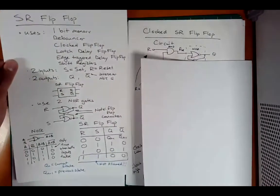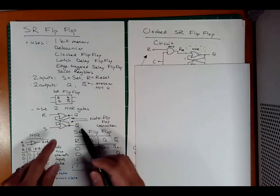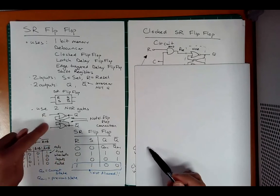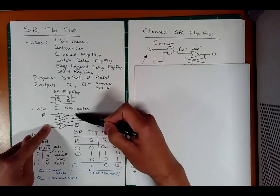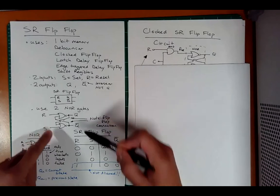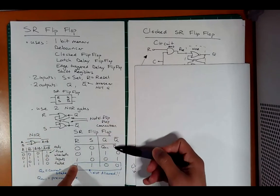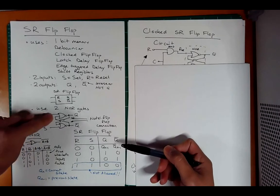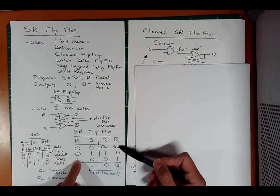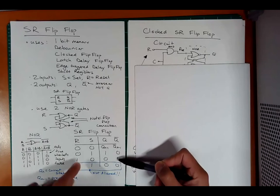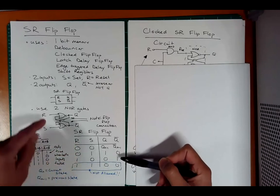Let's just remind ourselves what a flip-flop is. We have the set and reset inputs. If I push set and release, Q will get set to high and stay high — we have this kind of toggling between these two rows on the truth table. And if I hit the reset, it'll set Q as low and Q bar as high, toggling between those two rows.